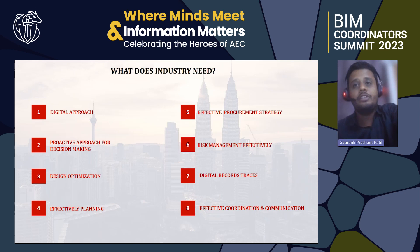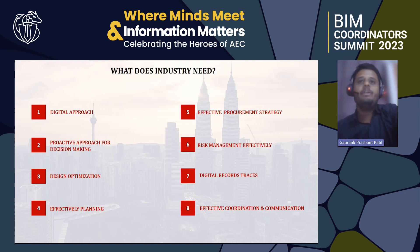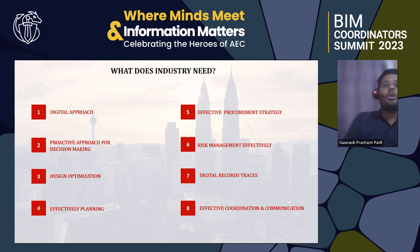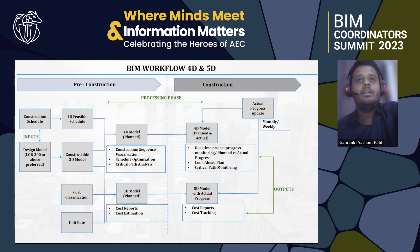So what does our industry need right now? As per the industry insights, 4.65 lakh crores were the extra amount needed to execute these projects. We need a digital and proactive approach for decision making: design optimization, effective planning, effective procurement strategy, risk management, digital record traces, and effective coordination and communication. We will see in the next slides how BIM can serve these industry needs.